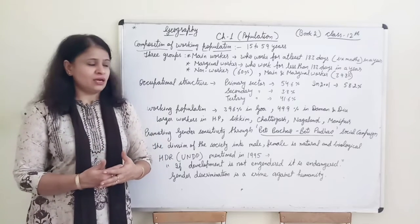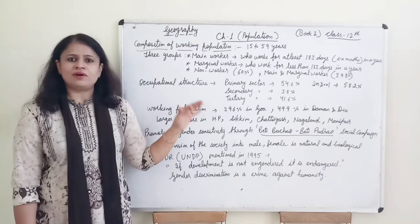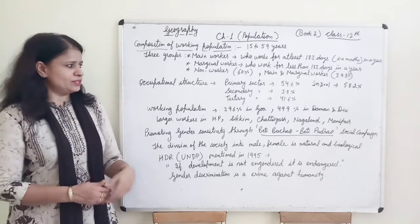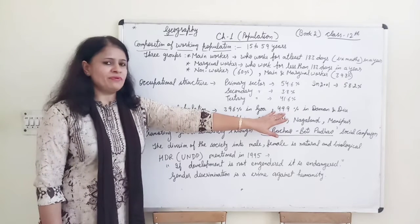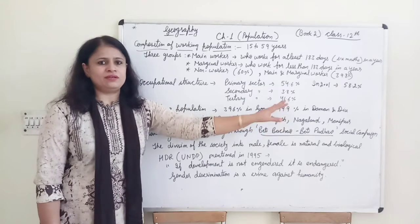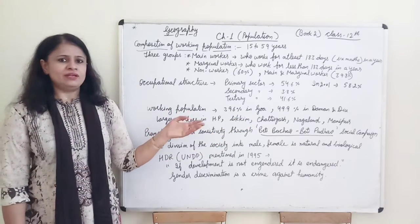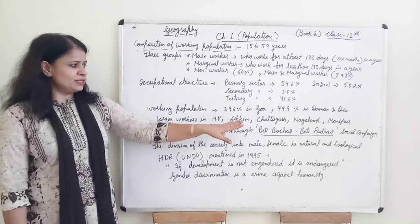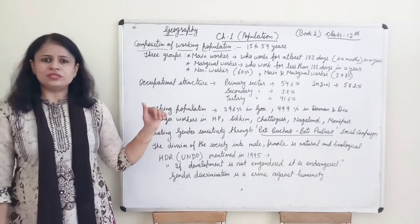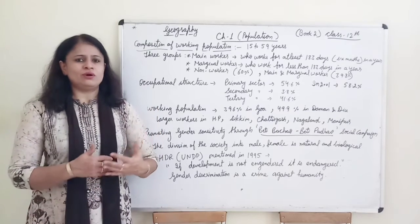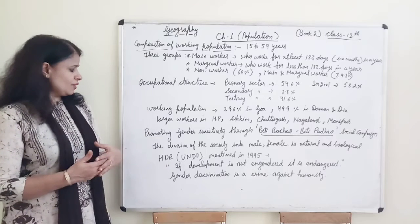Tertiary sector, population like Goa population 39.6% working population and union territory is 49.9% working population. Larger workers mainly in which states? Himachal Pradesh, Sikkim, Chhattisgarh, Nagaland, Manipur these states are more engaged in working occupation.